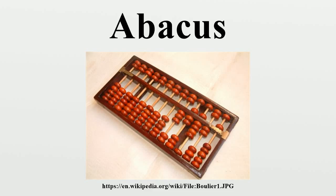The period 2700–2300 BC saw the first appearance of the Sumerian abacus, a table of successive columns which delimited the successive orders of magnitude of their sexagesimal number system. Some scholars point to a character from the Babylonian cuneiform which may have been derived from a representation of the abacus. Old Babylonian scholars such as Carusio believe that old Babylonians may have used the abacus for the operations of addition and subtraction. However, this primitive device proved difficult to use for more complex calculations.